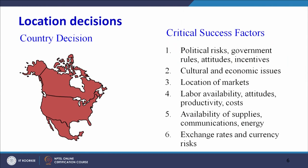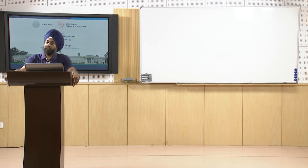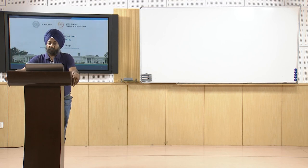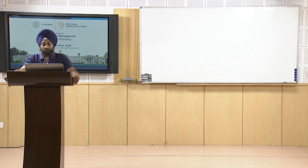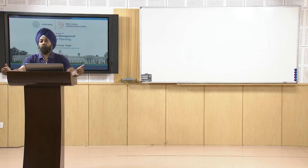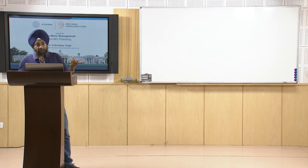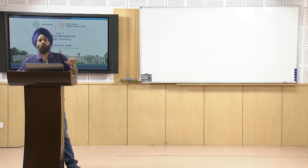The first level is the country decision. For a multinational company, the first decision is in which part of the globe the plant should be located. Critical success factors include: political risks, government rules, attitudes and incentives — for example, the 'Make in India' initiative attracts global manufacturing leaders by offering incentives and amendments to government policies.